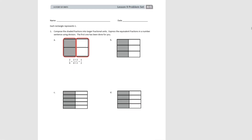Moving on to our problem set. It tells us to compose the shaded fractions into larger fractional units to express the equivalent fractions in a number sentence using division. The first one's been done. We started with two fourths shaded, then we divided by two and reduced the total number of units to two — two halves — and the number of shaded units to one. This is our new shaded unit, and that is one half of the whole. Pause the video and try B.